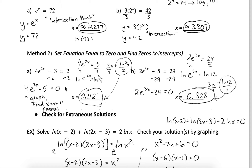We can also solve it algebraically. Adding 3 to both sides gives 4 times e to the 2x equals 5. Dividing both sides by 4 gives e to the 2x equals 5/4. Taking the natural log of both sides cancels the natural exponential and drops 2x down, leaving the natural log of 5/4 on the right. Dividing by 2 gives x equals the natural log of 5/4 divided by 2, which your calculator confirms matches the decimal answer.